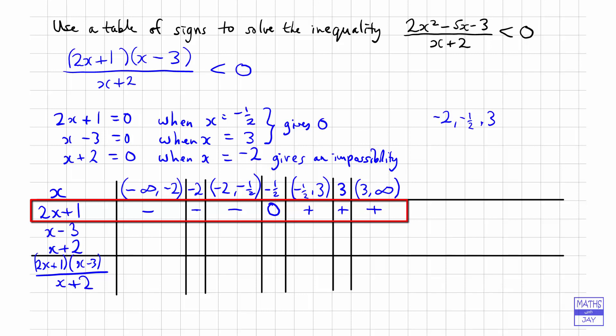So we're just working out the sign of 2x plus 1 for all different possible values of x, knowing that when x is minus 1 half, it's 0. For any value less than that, it's negative. Any value bigger than that, it's positive.